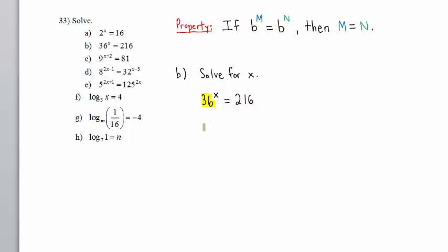36 is 6 to the second power, so we have 6 to the second power raised to the x. 216 is also a power of 6, 6 to the third power. Now the left-hand side, we must multiply those exponents. 2 times x is 2x, so we have 6 to the 2x equals 6 to the third.